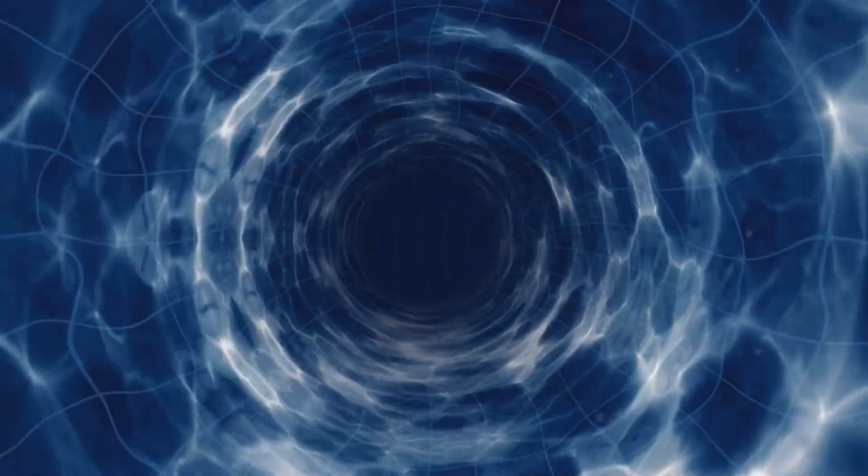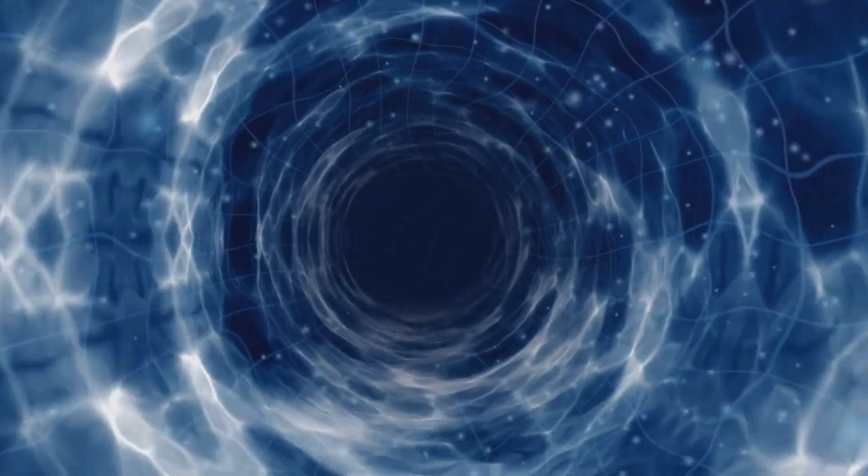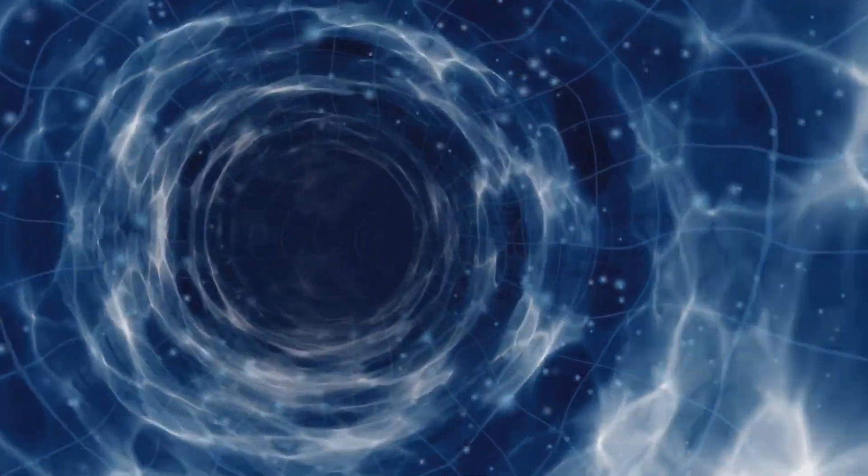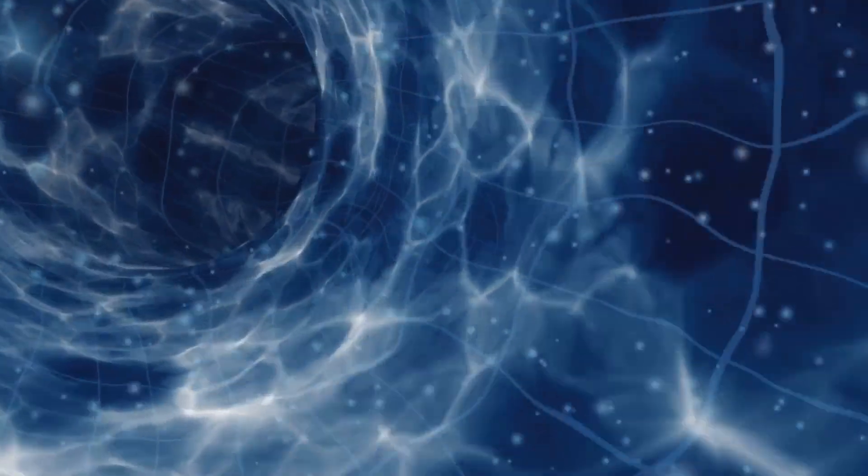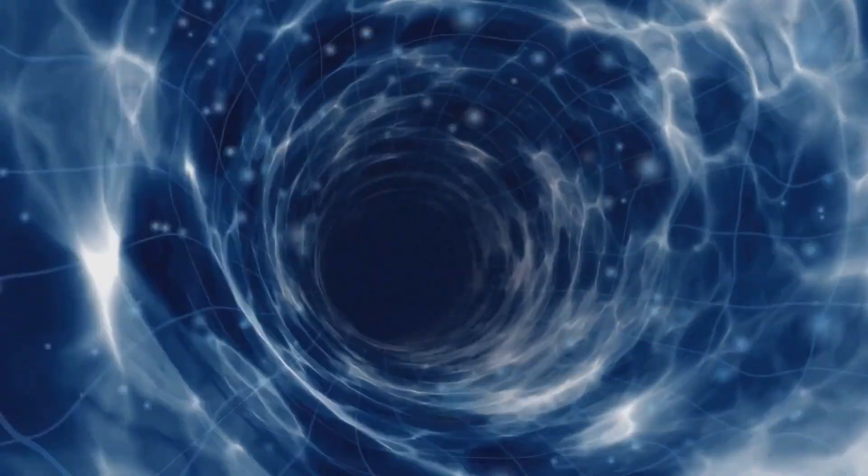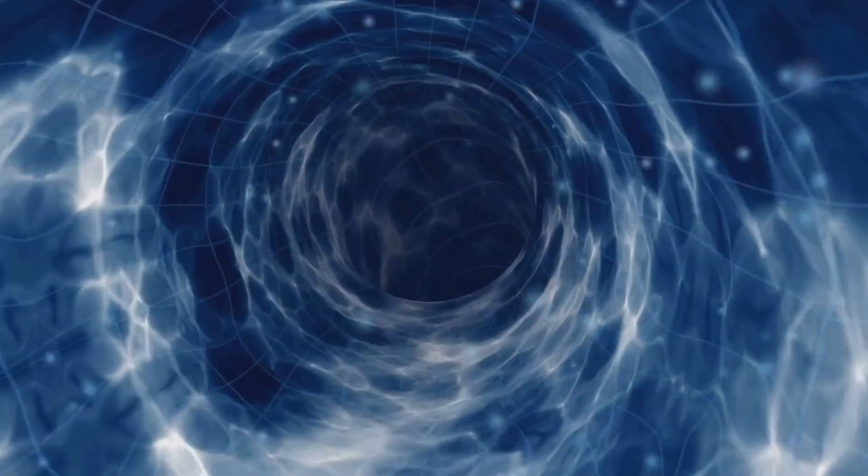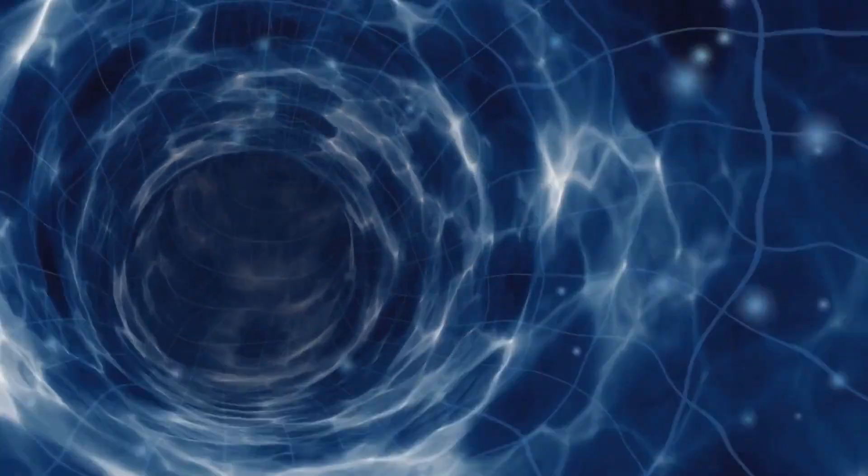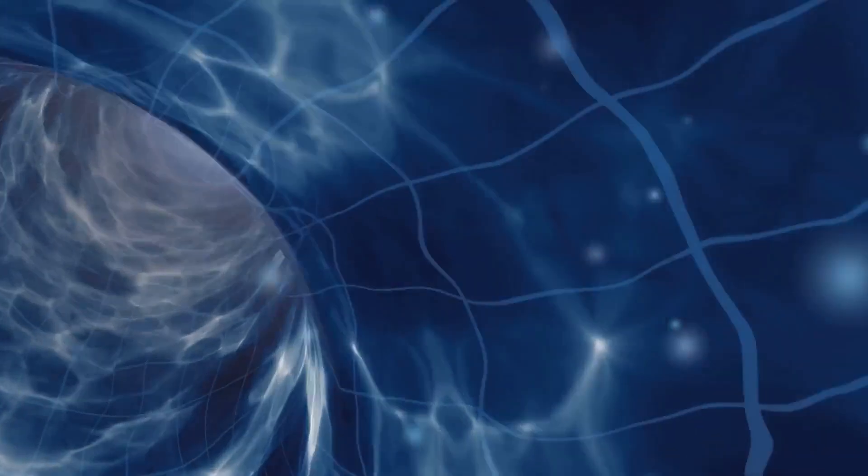Superposition is the idea that a quantum system can exist in multiple states at once, like an electron spinning up and down at the same time until someone measures it. Entanglement is when two particles are entangled, knowing the state of one instantly reveals the state of the other even if they're light years apart. People sometimes interpret this as if particles are literally hopping around in time or teleporting, but that's a stretch.